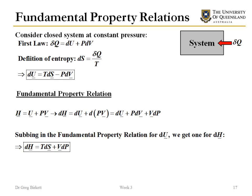To kick this off, we're going to look at what we call fundamental property relations. The first of these comes from looking at a closed system — a fixed amount of material — and the first law for that system. If we insert the definition of entropy, what we're left with is the fundamental property relation between u, s, and v. This is the first of our fundamental property relations.